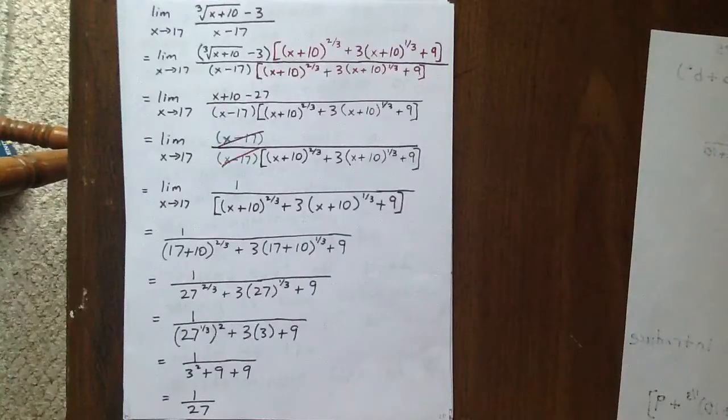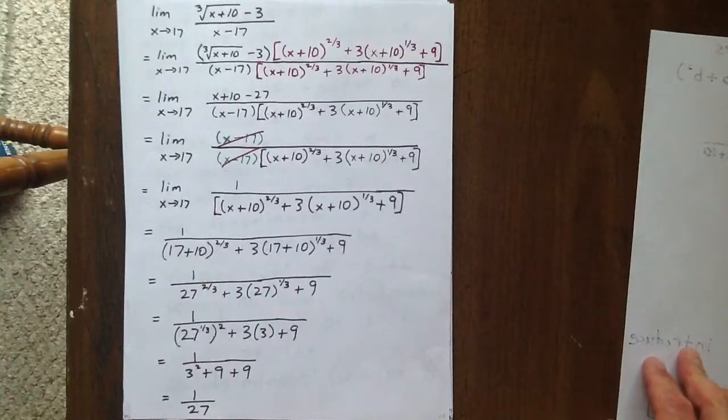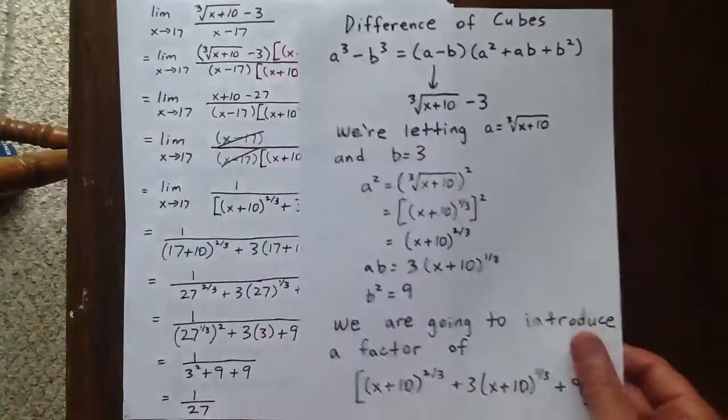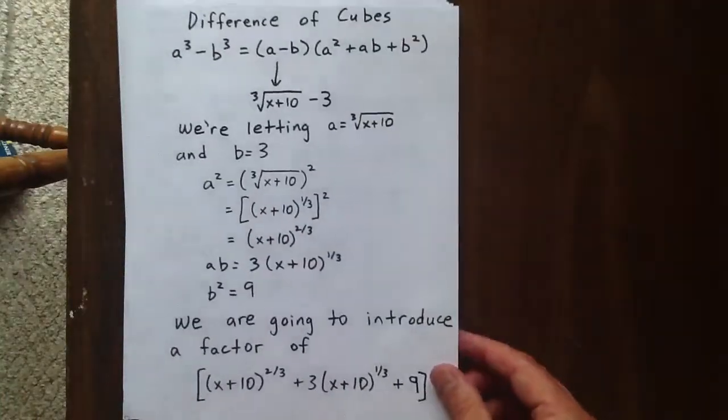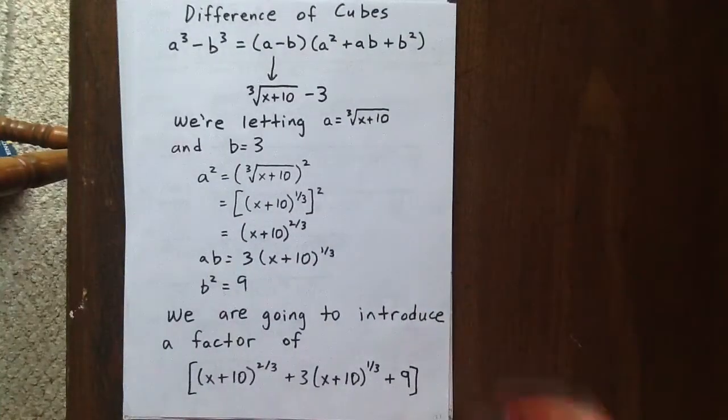So we somehow have to recall our difference of cubes principles. Well, those are shown here. When we have a cubed minus b cubed, that factors to a minus b times a squared plus ab plus b squared.